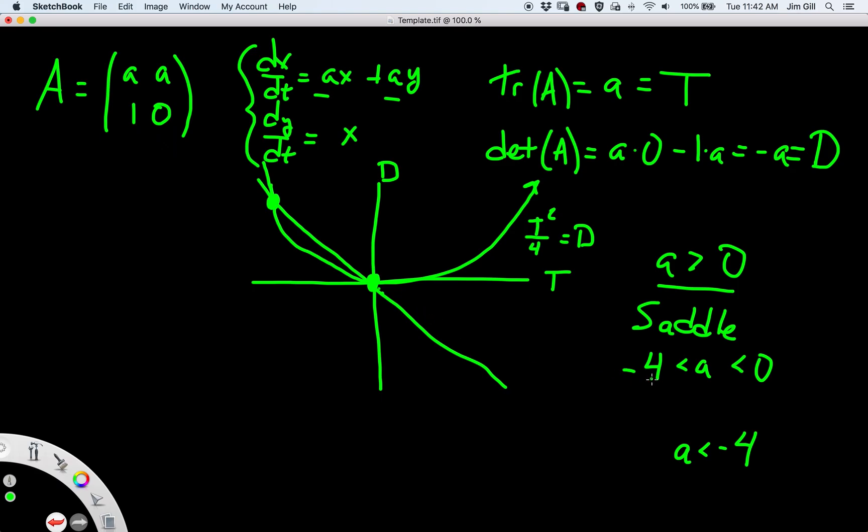Now, when A is between negative 4 and 0, then we have our solution here above the parabola. And remember, above the parabola corresponds to complex eigenvalues. And on this side, in fact, it corresponds to a sink. So this is a spiral sink.